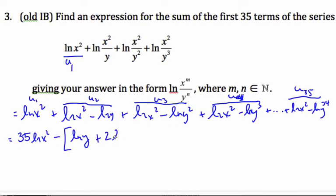It's going to be ln y plus 2 ln y plus 3 ln y and so on plus 34 ln y.